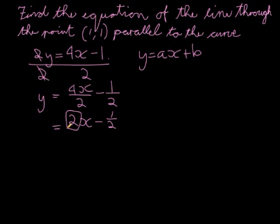That means the equation that I'm trying to find, the unknown curve's equation, what I already know is that my gradient is equal to 2. So what I have is y = 2x + b.